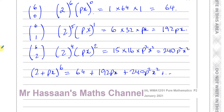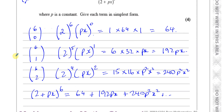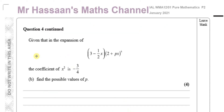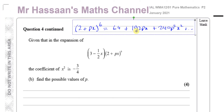Those are the first three terms in ascending powers of x. So the expansion of (2 + Px)⁶ is: 64 + 192Px + 240P²x². That's part A complete. Now for part B: given that in the expansion of (3 − ½x)(2 + Px)⁶, the coefficient of x squared is −¾, find the possible values of P.